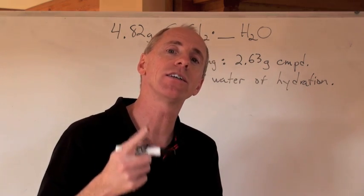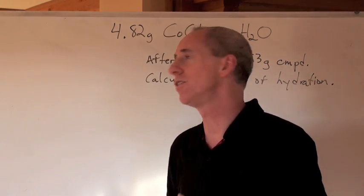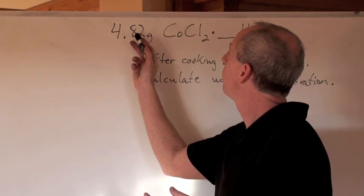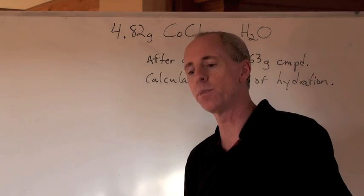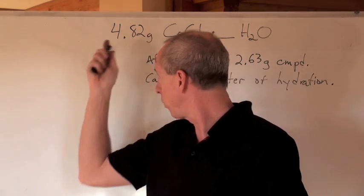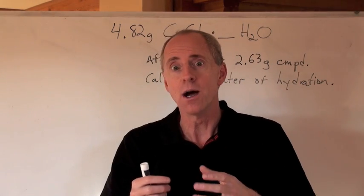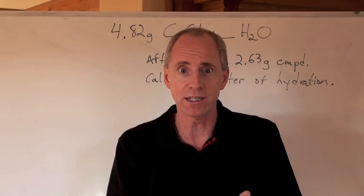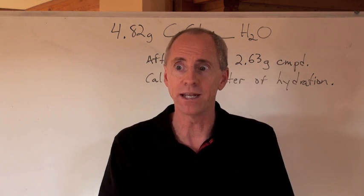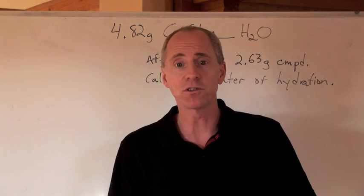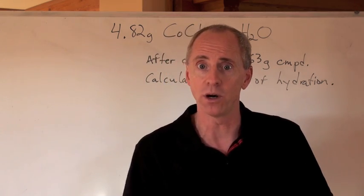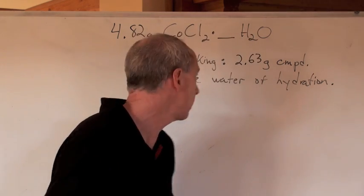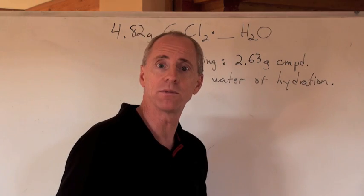Can you calculate that number given this information that I've got 4.82 grams of that compound originally? I take that mass of that sample, put it into an evaporating dish, put it onto a hot plate and cook it up. Then after a certain amount of time I weigh and re-weigh the chemical until the mass doesn't change anymore and I get a new mass after cooking it of 2.63 grams.